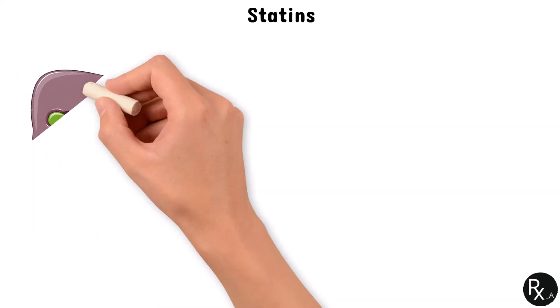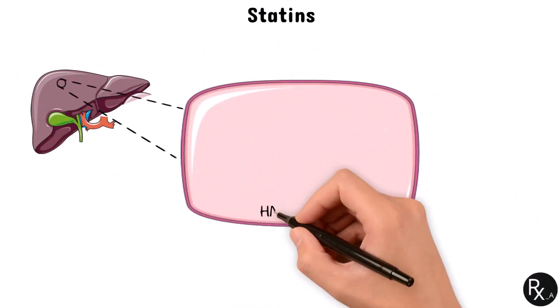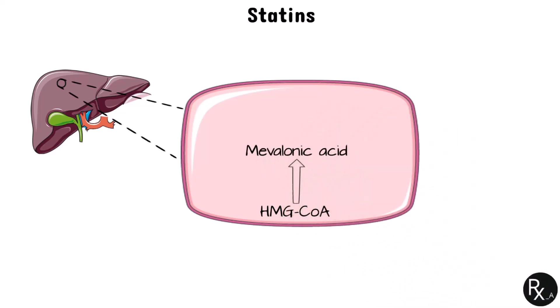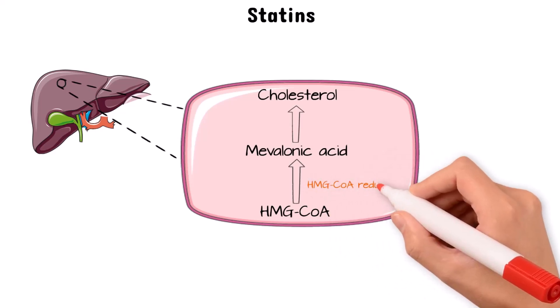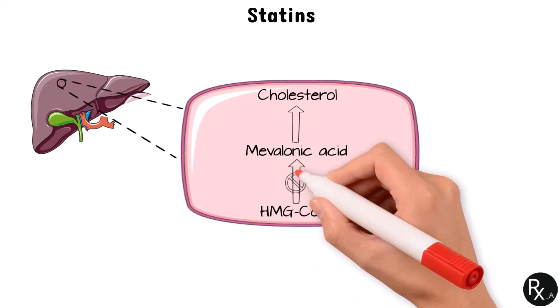There are many main classes of medications that lower cholesterol. Let's start with HMG-CoA reductase inhibitors, commonly referred to as statins. We need to look at the liver cell in more detail since it is the site of the rate-limiting steps to convert HMG-CoA into mevalonic acid, a precursor to cholesterol, by the enzyme HMG-CoA reductase. Statins efficiently lower the concentration of cholesterol in the liver cell by inhibiting this enzyme.